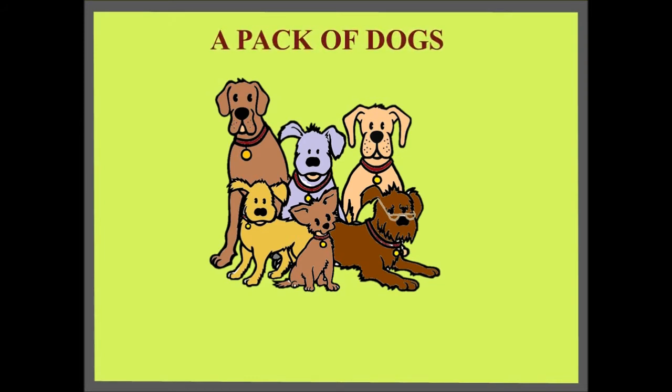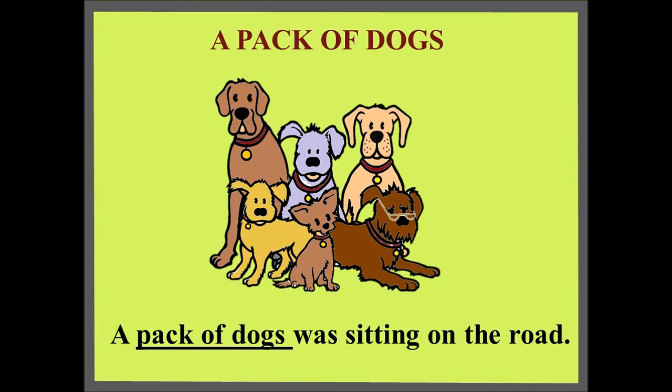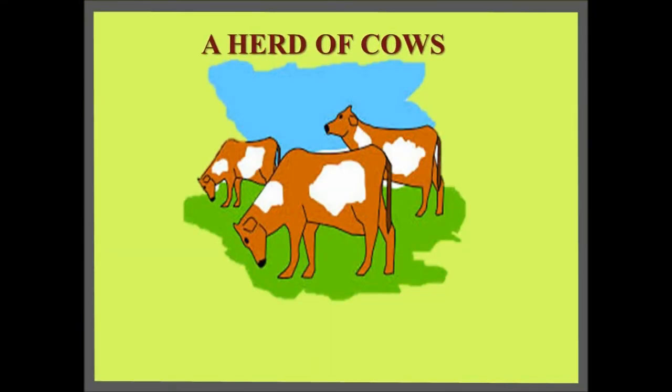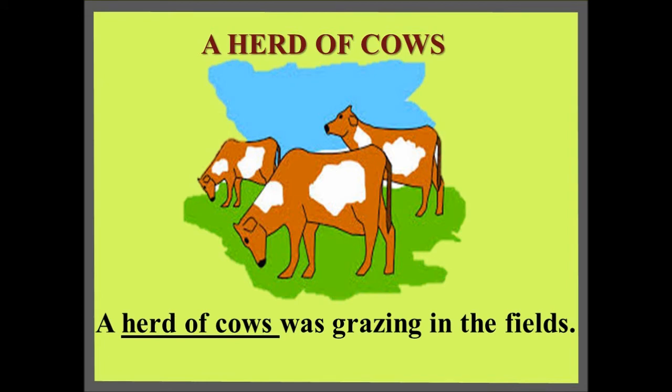A pack of dogs — a group of dogs is called a pack. Sentence: A pack of dogs was sitting on the road. A herd of cows — a group of cows is called a herd. Sentence: A herd of cows was grazing in the fields.